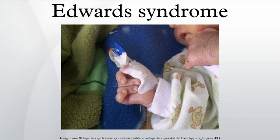In utero, the most common characteristic is cardiac anomalies, followed by central nervous system anomalies such as head shape abnormalities. The most common intracranial anomaly is the presence of choroid plexus cysts, which are pockets of fluid on the brain. These are not problematic in themselves, but their presence may be a marker for trisomy 18. Sometimes, excess amniotic fluid or polyhydramnios is also exhibited.